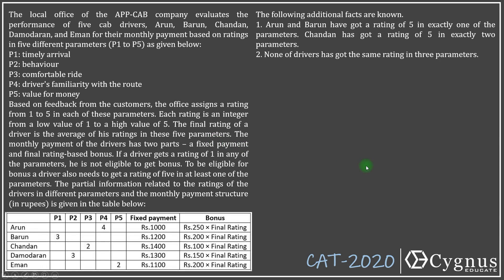The local office of the AbCab company evaluates the performance of 5 cab drivers — A, B, C, D, E — for their monthly payment based on ratings in 5 different parameters P1 to P5, where P1 is timely arrival, P2 is behavior, and so on. Based on feedback from customers, the office assigns a rating from 1 to 5 in each of these parameters. Each rating is an integer from a low value of 1 to a high value of 5.